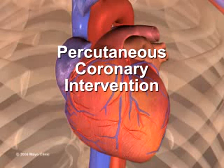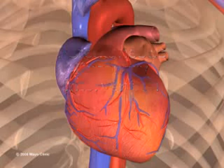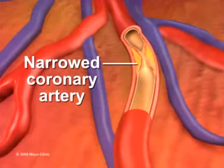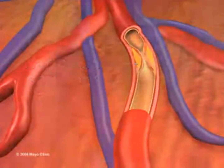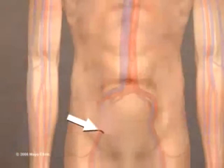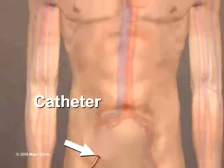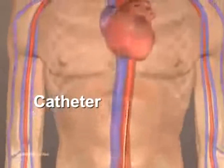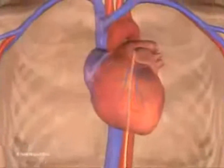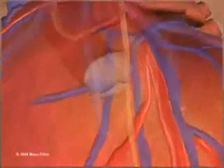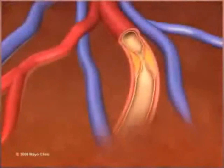Percutaneous coronary intervention, also known as coronary angioplasty, opens narrowed coronary arteries. A small, hollow tube called a catheter is inserted into an artery in the groin or arm and threaded to the affected artery.